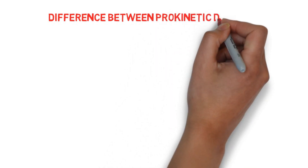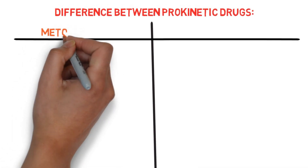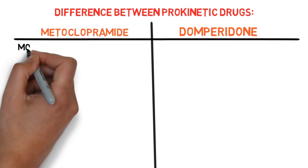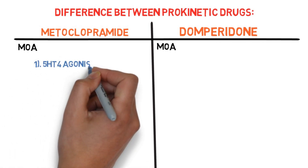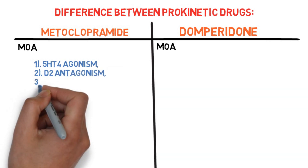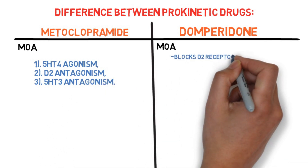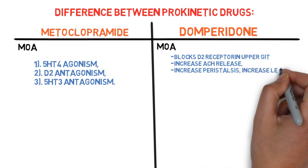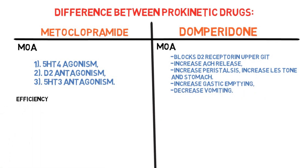Now let's discuss the differences between metoclopramide and domperidone. Regarding mechanism of action: metoclopramide acts at three receptors — 5-HT4 agonism, D2 antagonism, and 5-HT3 antagonism — whereas domperidone acts only at D2 receptors. Domperidone blocks D2 receptors in the upper GIT, leading to increased acetylcholine release, increased peristalsis, increased tone of the lower esophageal sphincter and stomach, increased gastric emptying, and ultimately decreased vomiting.